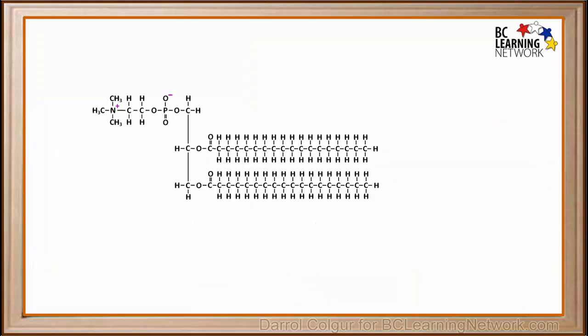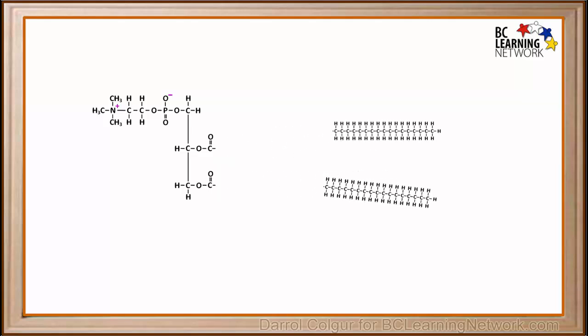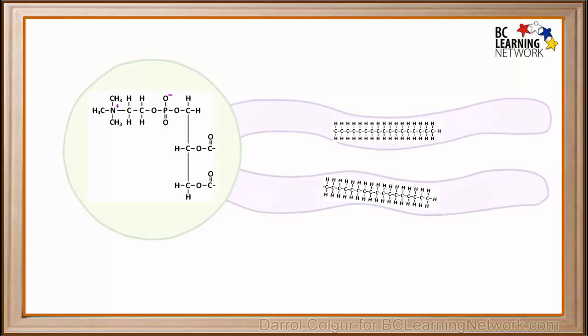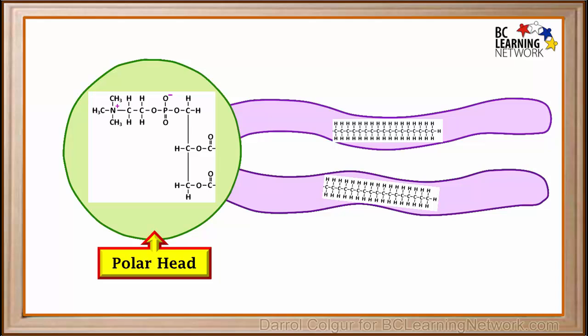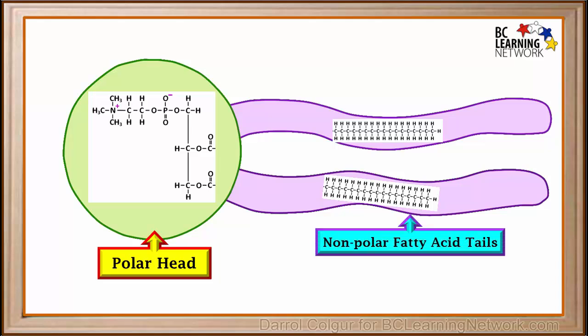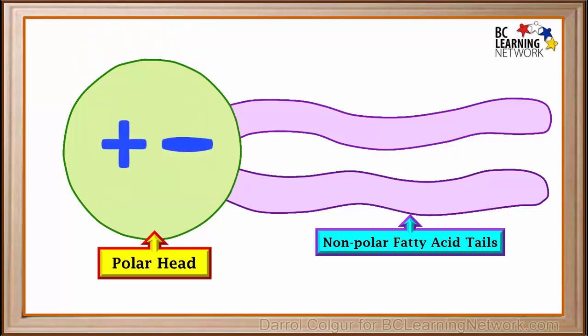If we take a diagram of the formula for a phospholipid and break off the fatty acid tails, we can draw a simplified diagram around it, where the green circle is the polar head and the purple protrusions represent the nonpolar tails. Remember, the polar head contains positive and negative charges, so we'll represent the polar head like this.